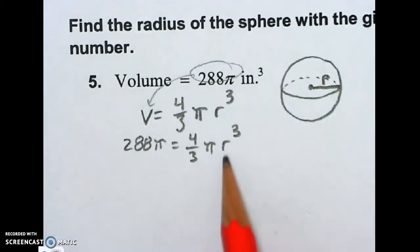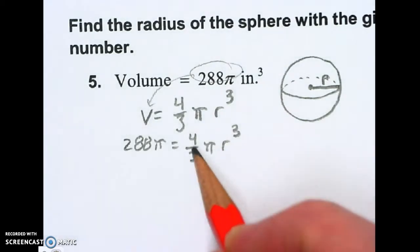Okay, I need to solve for R. First thing I need to do is get rid of this 4 thirds and π. I'm going to deal with the 4 thirds first. If you didn't remember, you can get rid of a fraction by multiplying by the reciprocal.